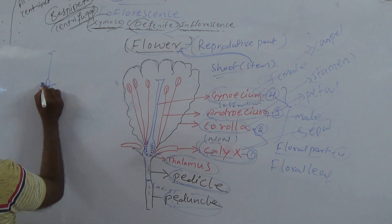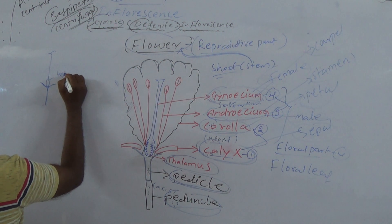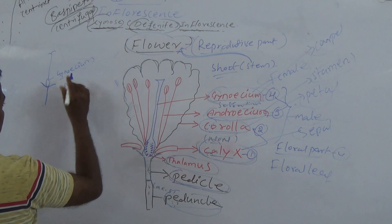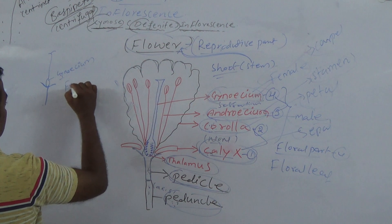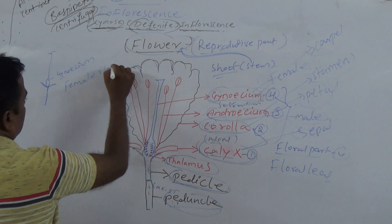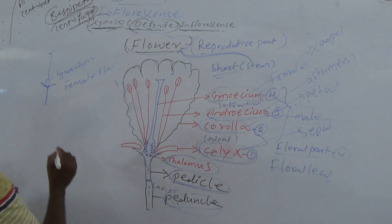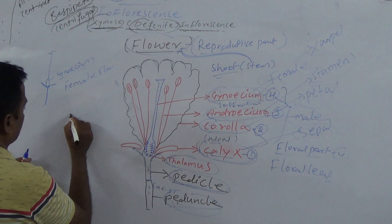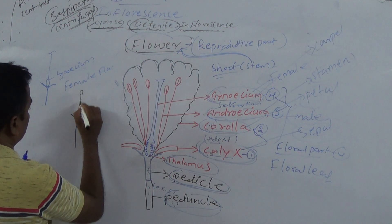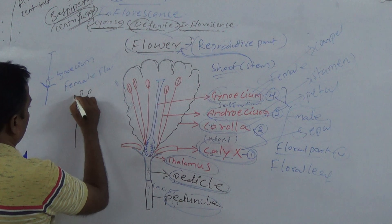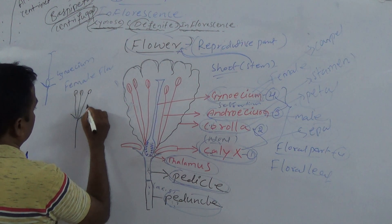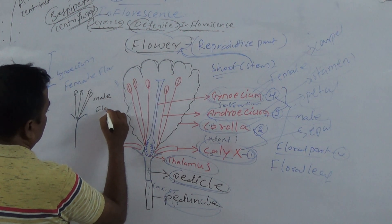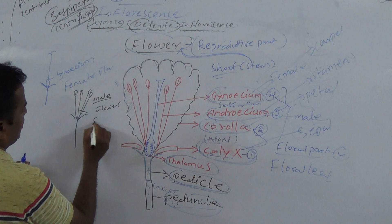In a female flower, only Gynoecium is present — that is a female flower. And if the flower has only stamens, it is a male flower. So only stamens are present in a male flower.